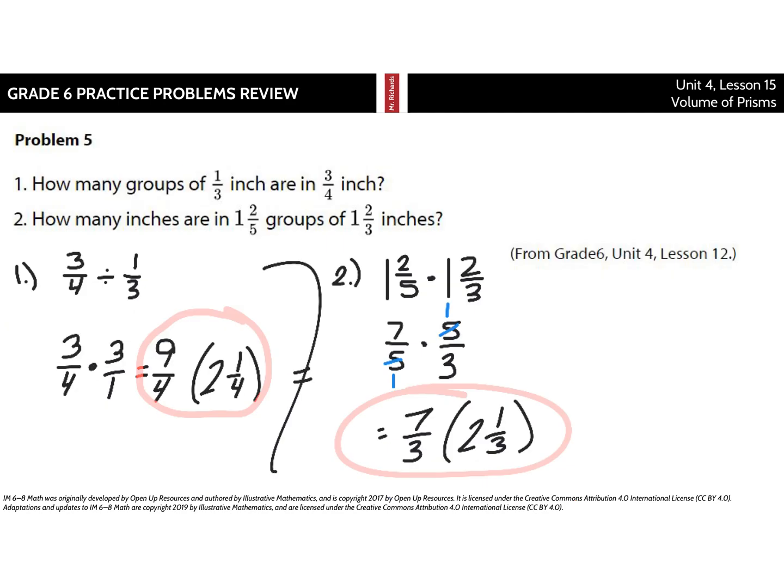How many groups of one-third inch are in three-fourths inches? Well, take three-fourths and divide by one-third. Keep, change, flip, you get nine-fourths, which is equivalent to two and a fourth.